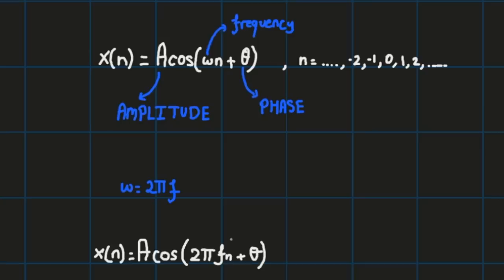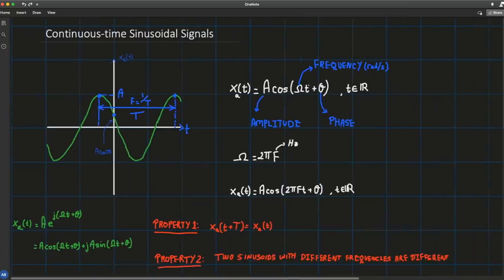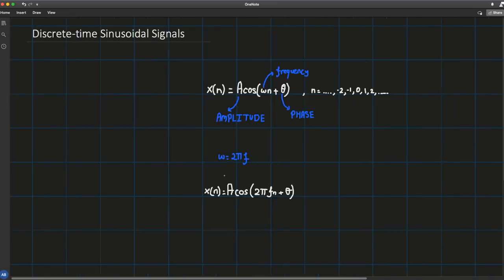For the moment, we consider the discrete time sinusoid as somewhat independent of the continuous time case, even though that's not completely true — you can always obtain it by sampling at t = nT, where the period is one second. Now let me show you an example of such a sinusoidal signal.